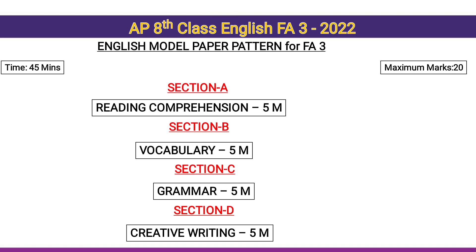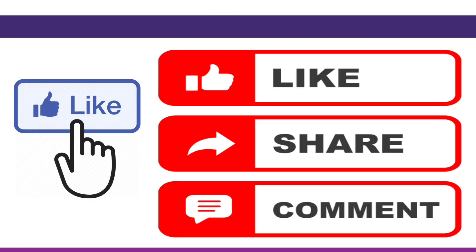Section A: Reading Comprehension for 5 marks. Section B: Vocabulary for 5 marks. Section C: Grammar for 5 marks. Section D: Creative Writing for 5 marks. Totally 20 marks.